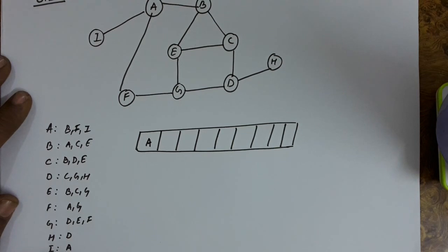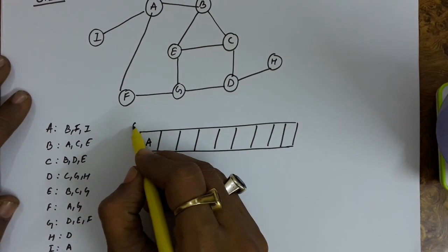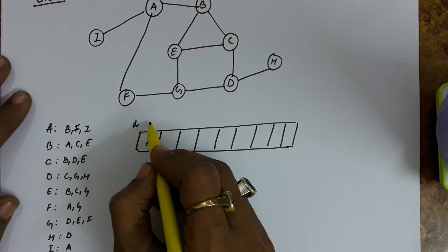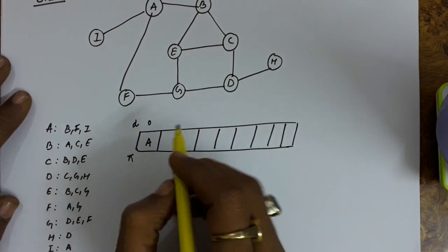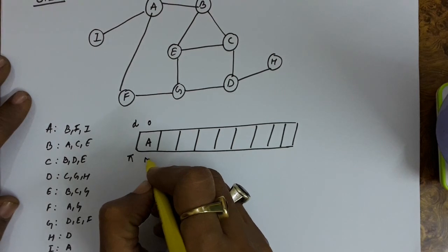In this graph the root is not given, so in the alphabetical sequence A comes first. So I am inserting this A in the queue. The distance of this A vertex is set as zero and there is no predecessor of A vertex.